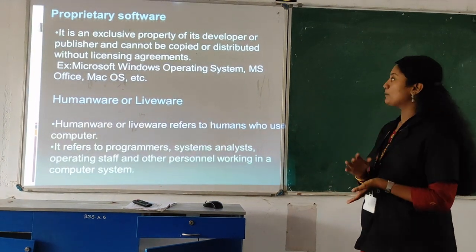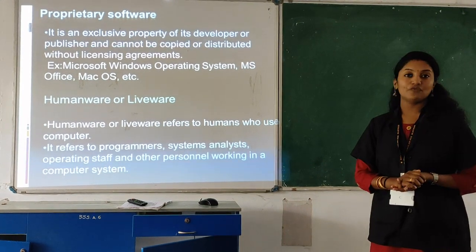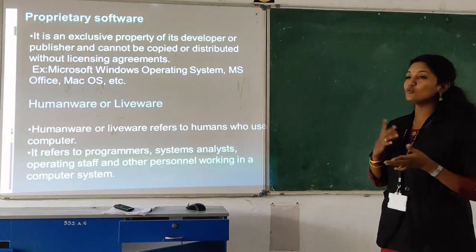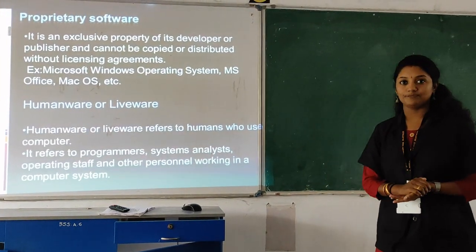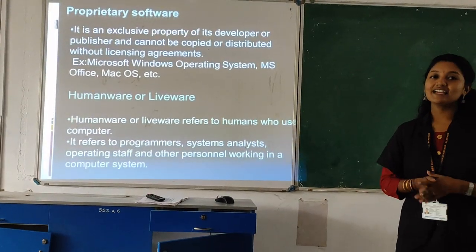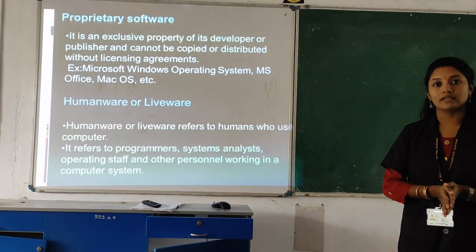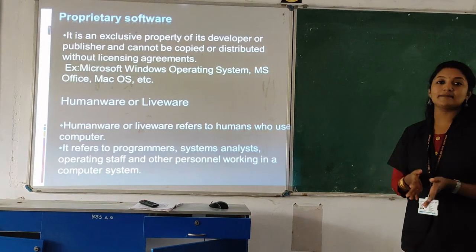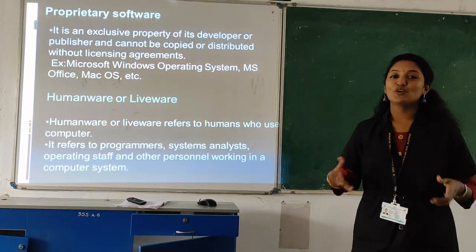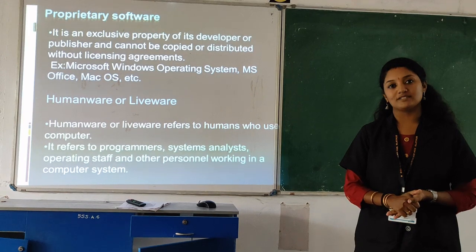Proprietary software is an exclusive property of the developer or publisher. Examples include Microsoft Windows, Microsoft Office, and Mac OS. Humanware refers to the humans who are using the computer system — like programmers, system analysts, operating staff, and other personnel working with the computer system.